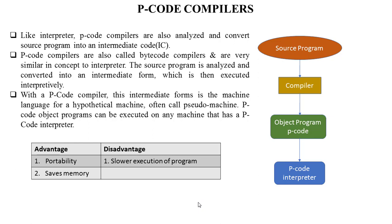Another advantage is that it saves memory: the P-code object program is often much smaller than a corresponding machine code program. The slower execution of a program is a disadvantage of the P-code compiler, as execution of a P-code program is much slower than that of equivalent machine code. Since many P-code compilers are designed for single-user systems, speed of execution is less significant because response time is the major factor in system performance. In summary, the source program is compiled by the P-code compiler which generates P-code, and this P-code is then read and executed by a P-code interpreter. Thank you for watching.